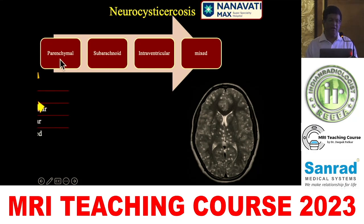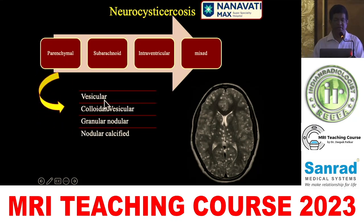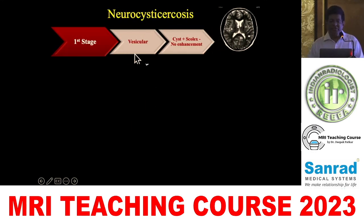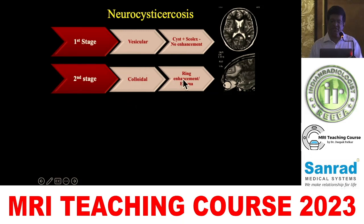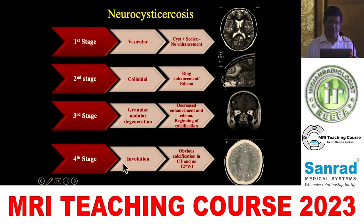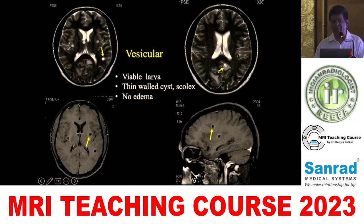In the parenchyma, four stages are recognized: vesicular, colloidal vesicular, granulonodular, and nodular calcified. The first vesicular stage shows presence of cysts and scolices without enhancement. The second colloidal stage shows ring enhancement and edema. The third granulonodular stage shows decreased enhancement, decreased edema, and beginning calcification. The last stage of involution shows obvious calcifications on CT scan and gradient echo images.